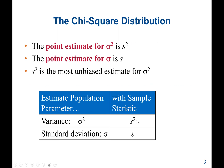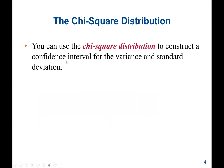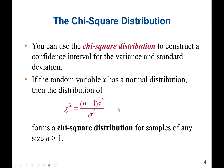With sample statistics, we have the sample variance, which is S squared, and also the sample standard deviation. We can use the chi-square distribution to construct confidence intervals for the variance and standard deviation. If the random variable X has a chi-square distribution, the distribution of chi-square is (N minus 1) times S squared over sigma squared, where N is the sample size, S squared is the sample variance, and sigma squared is the population variance. This forms the chi-square distribution for samples of any size greater than 1.